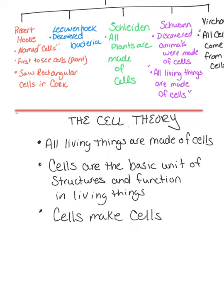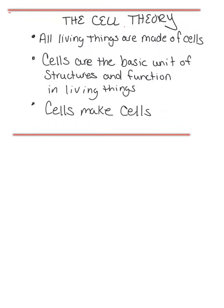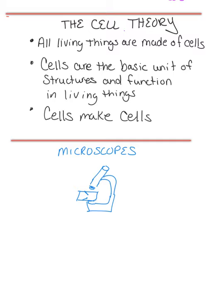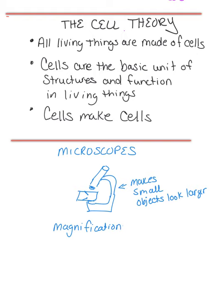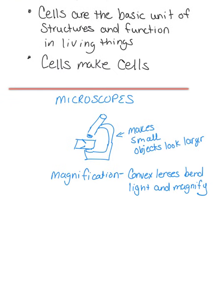Lastly in this section, we're going to talk about microscopes. This is my best picture of a microscope. A microscope is an instrument that makes small objects look larger. The lenses inside of a microscope provide magnification by the way they bend light — convex lenses bend light and magnify the image. Resolution is the ability to clearly distinguish individual parts, turning blur into clear.